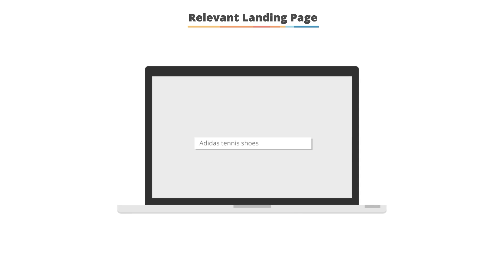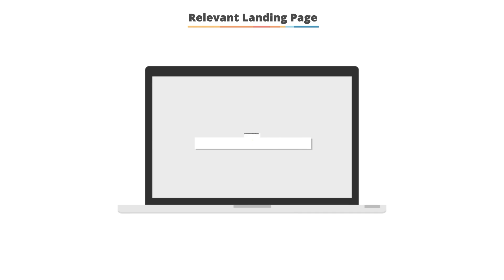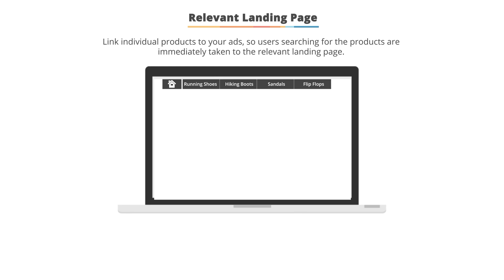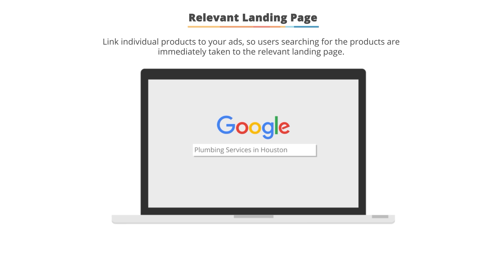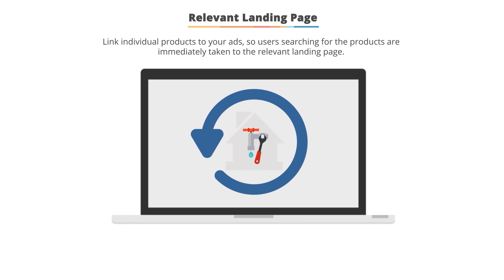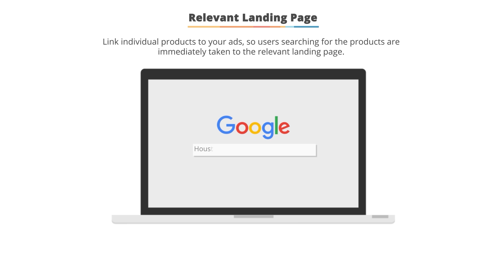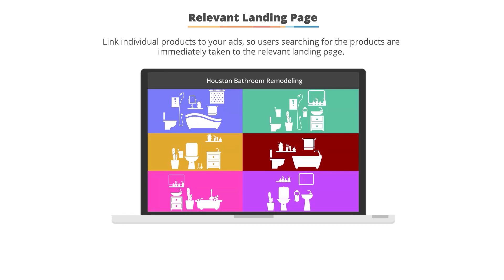If someone searches for 'Adidas tennis shoes,' including a brand name, they want to see Adidas tennis shoes on the landing page. You want to link your ad to pages that showcase the product or services someone is actively looking for. The same applies to local businesses: if someone in Houston searches for plumbing services, they want to see a page about plumbing services in Houston. If they search for bathroom remodeling in Houston, they want to see a page about remodeling companies and what you can do for them from someone who services that location.